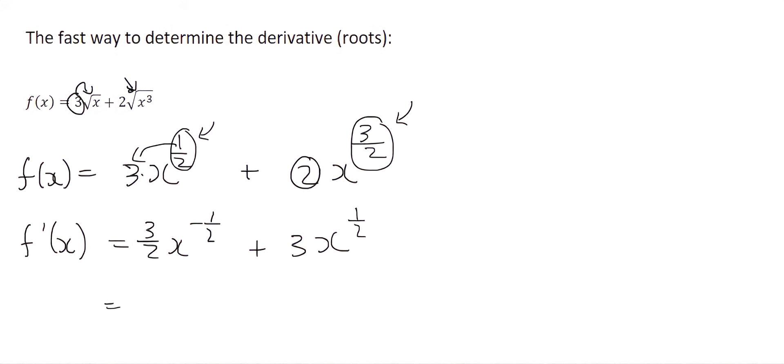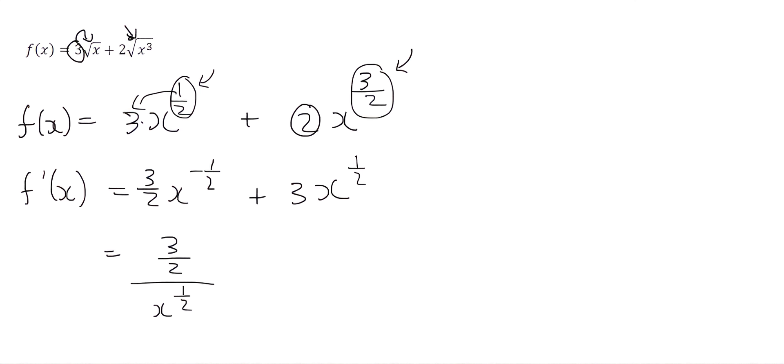I then look for any negative exponents, yes there are negative exponents, so I go 3 over 2 over x to the positive 1 half, plus, and then this part is okay, so I can leave it as 3x to the half, and that's it.